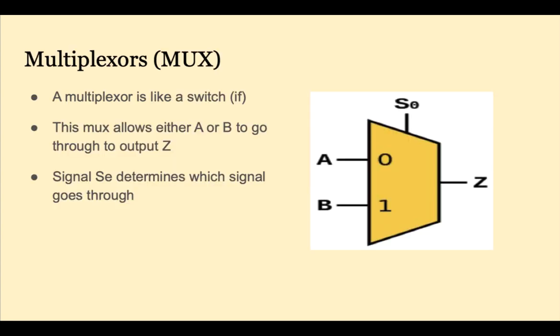A multiplexer is like a switch. This multiplexer has 2 inputs, A and B. It's only going to allow 1 to go through to the output Z. The signal SE is a single bit which determines which signal A or B goes through.